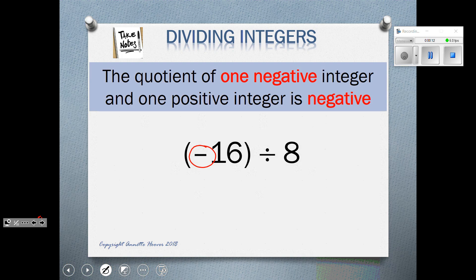The rule is the quotient, or the answer, of one negative integer and one positive integer is negative. In other words, you count up the negative signs. If there's one negative, the answer's going to be negative. Here we have negative 16 divided by 8, so I think to myself, 16 divided by 8 is 2. There's one negative sign that makes it negative 2.